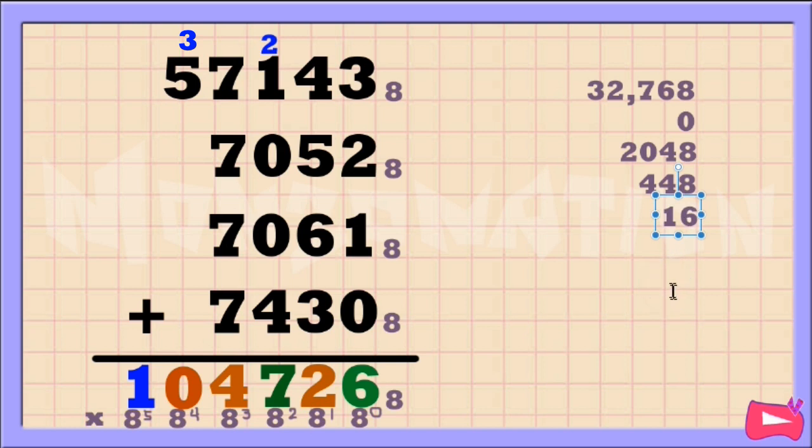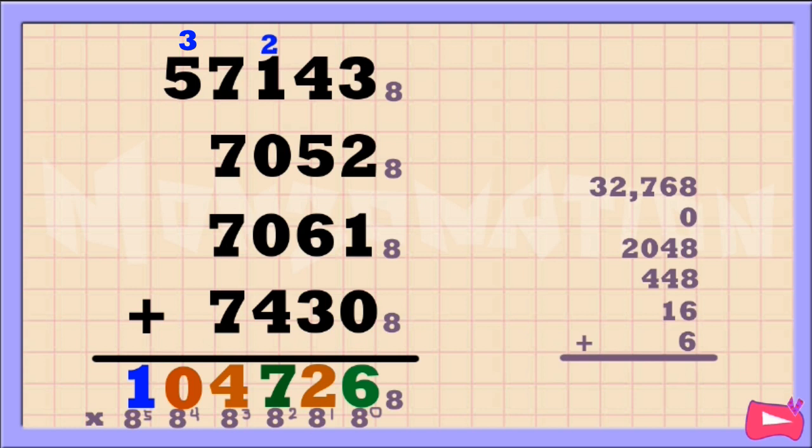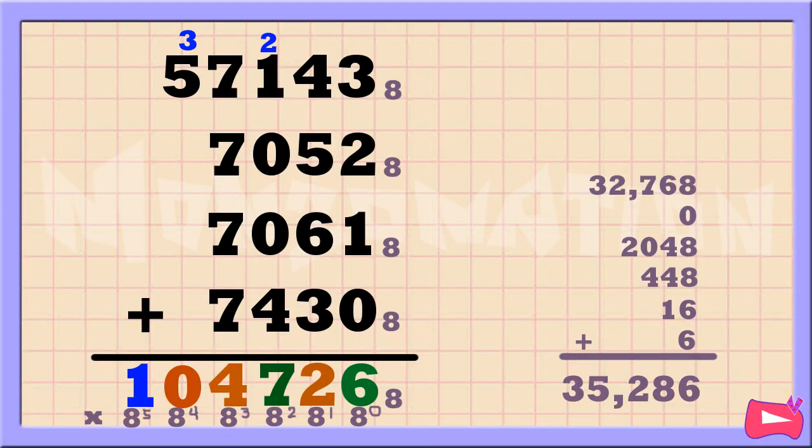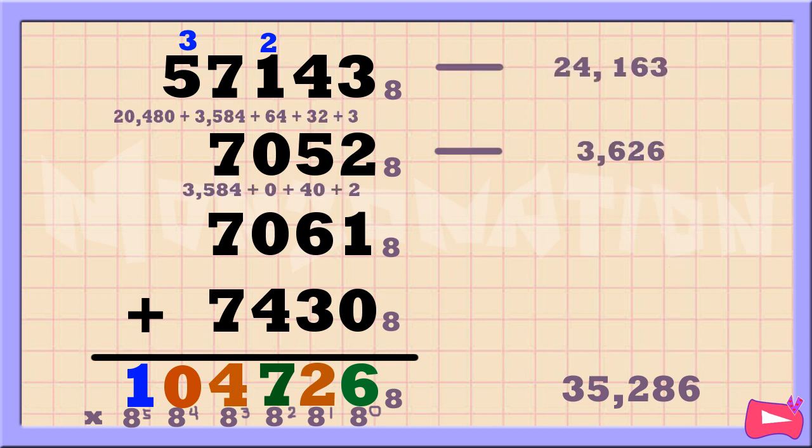And 2 times 8 to the power of 1 is 16. Then last number: 6 times 8 to the power of 0 is 6. Now let's add all of these numbers and we get 35286.